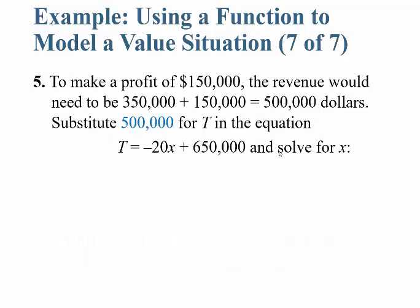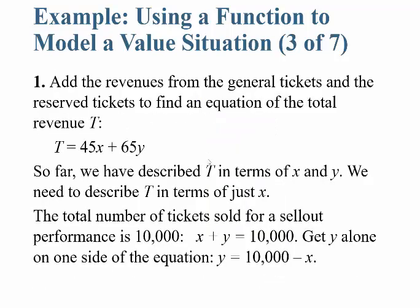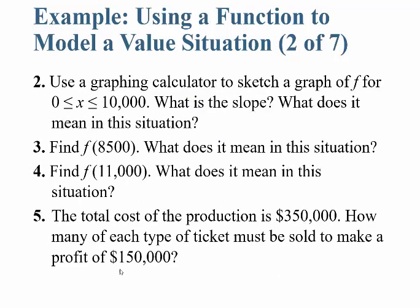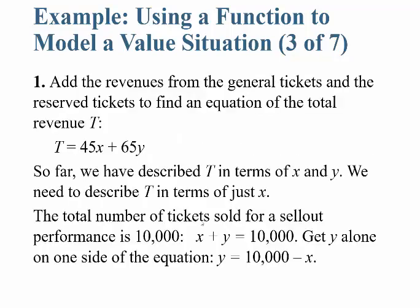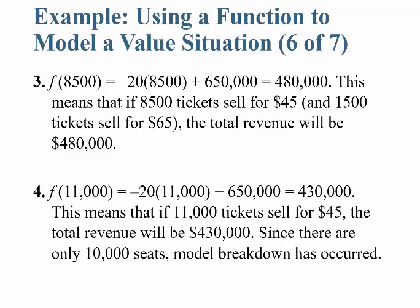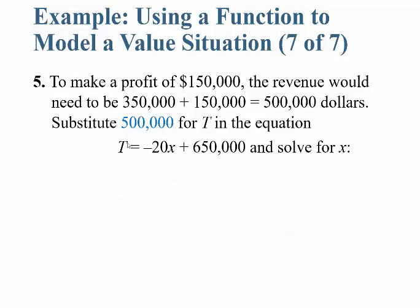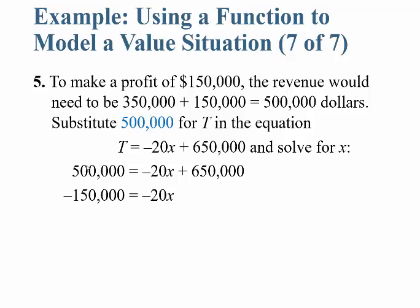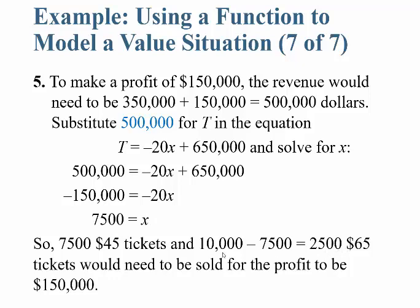To make a profit of $150,000, the revenue needs to be $350,000 (production cost) plus $150,000 = $500,000. Substituting $500,000 for T: 500,000 = −20X + 650,000, so −150,000 = −20X, giving X = 7,500. So you'd need to sell 7,500 seats at $45 and 2,500 seats at $65 to make a profit of $150,000 for this single show.